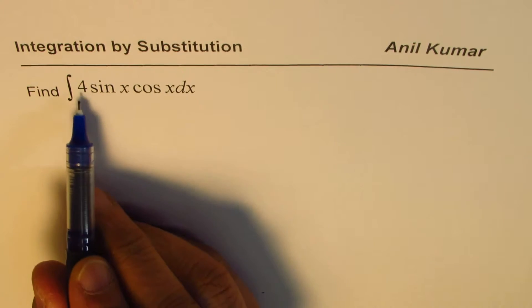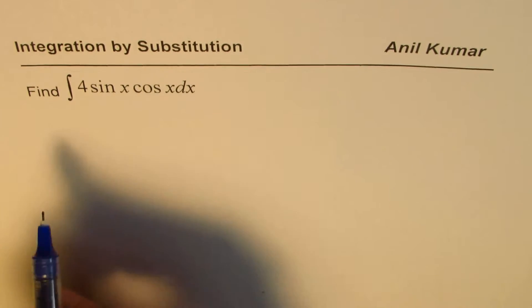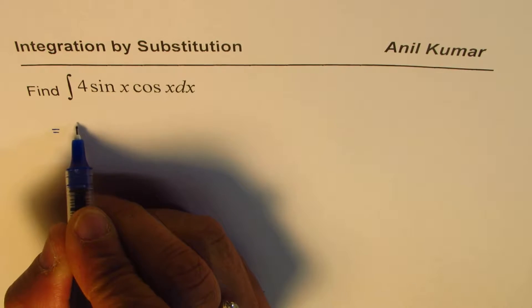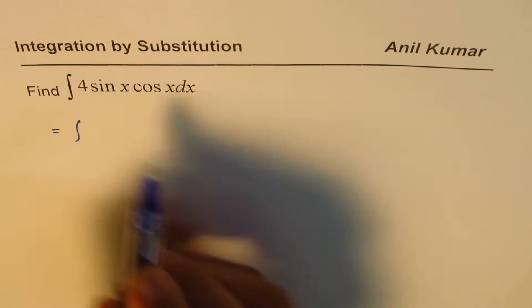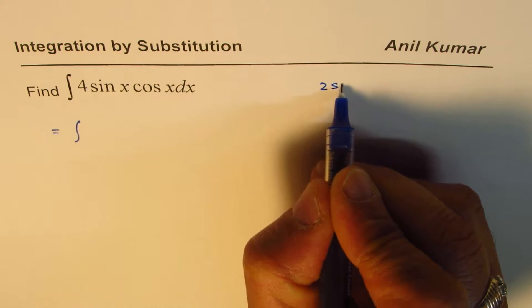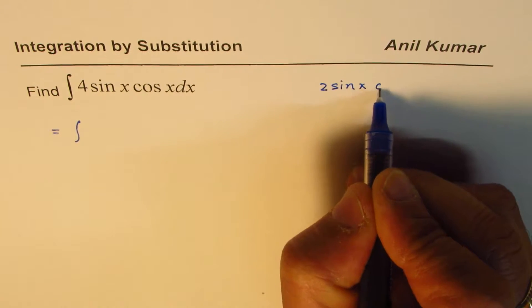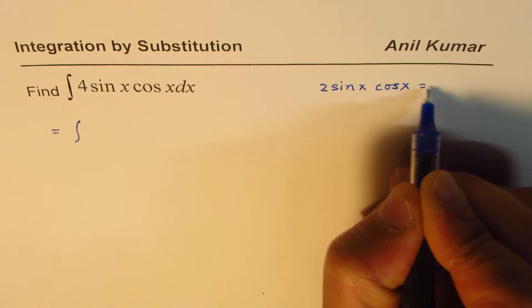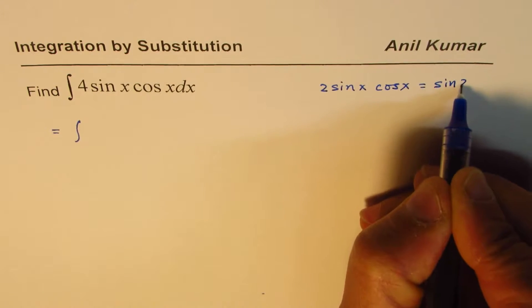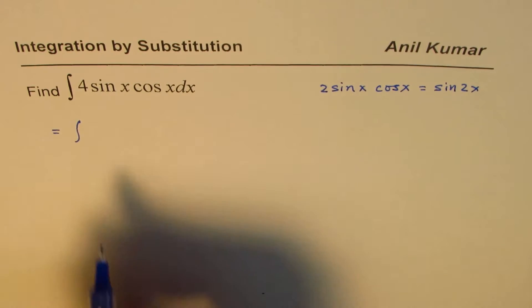The question here is: find integral 4sin(x)cos(x)dx. We could rewrite this as integral of—you remember the formula, 2sin(x)cos(x) equals sin(2x), right? So that's the formula which we want to apply.